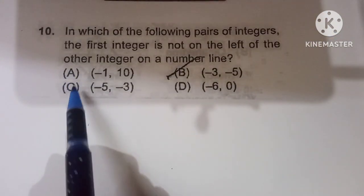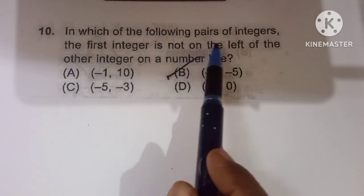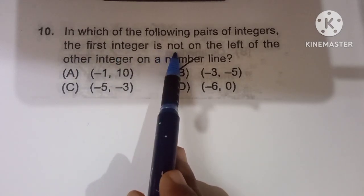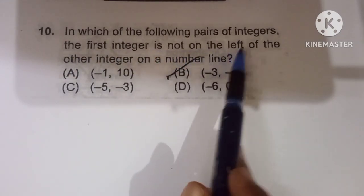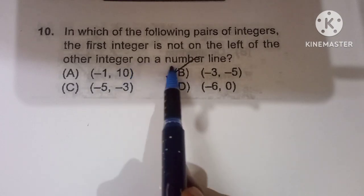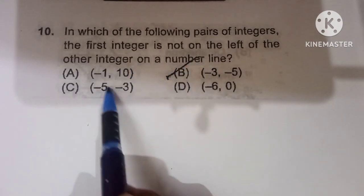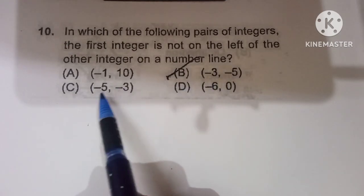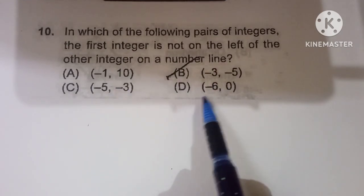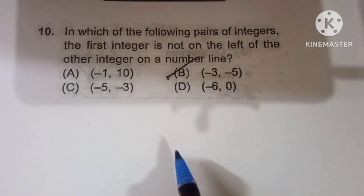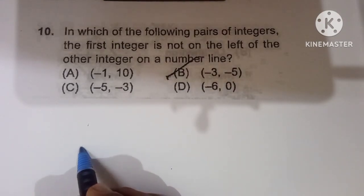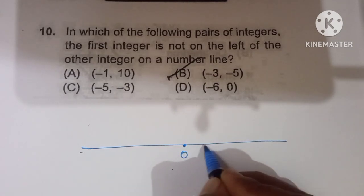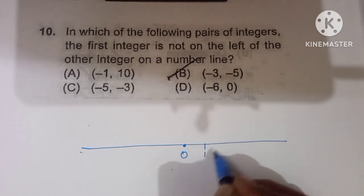Tenth question: in which pair of integers is the first integer NOT on the left side of the other on a number line? Option A: minus 1 and 10 — minus 1 is on the left side of 10, so this does not qualify. Option B: minus 3 and minus 5 — on the number line, minus 3 is to the right of minus 5.